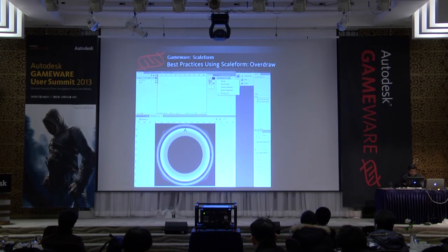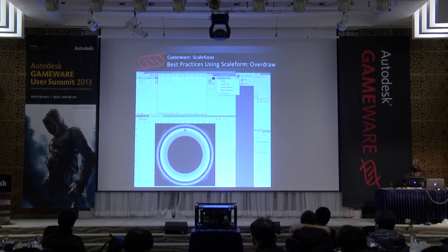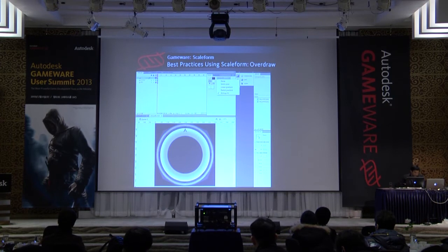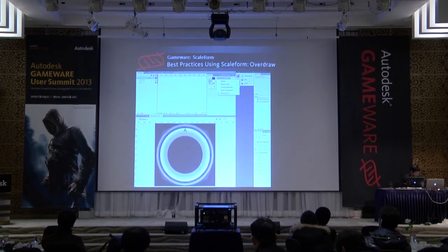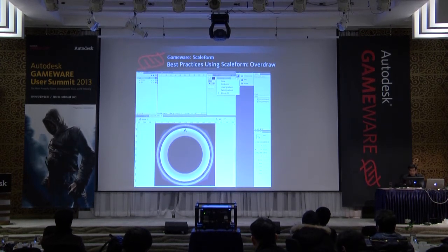How do we reduce overdraw in this situation? One way is to convert these bitmaps into vector shapes and then use a bitmap fill. Flash Studio provides a tool that allows you to convert bitmaps into shapes. You take these bitmaps, convert them into a shape with a bitmap fill, and then carve out the interior using vector editing tools. Now you've converted this bitmap into a vector shape with the interior carved out, so you no longer have all that interior region.